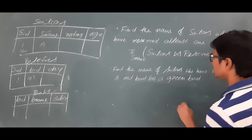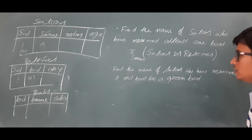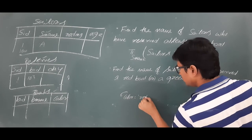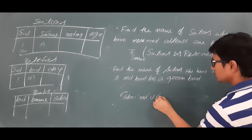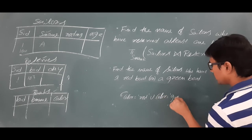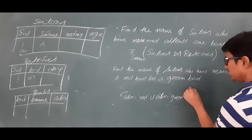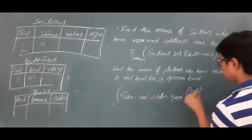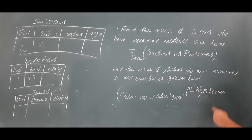First I need to identify the red and green boats from the boats table. I apply the selection condition: color = 'red' union color = 'green' from the boats table — identifying boats which are red or green color. On top of that result I apply a natural join with the reserves table.